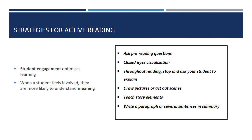Here are some strategies for active reading. Student engagement optimizes learning — the more a student feels involved in a story, the more likely they are to understand its meaning. Ask pre-reading questions; ask students to visualize something read aloud by closing their eyes and telling you what they see or feel. Throughout reading, stop and ask your student to explain what has happened or check in with their reactions. A particularly effective approach is to draw pictures or act out scenes from stories, with students taking on the roles of different characters — bringing something on the page into a more physical, active, and kinesthetic place. You can also teach story elements such as plot, setting, and character, and write a paragraph in summary.